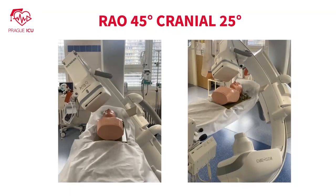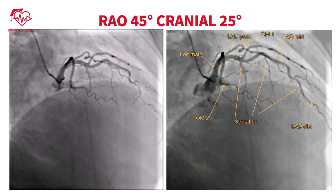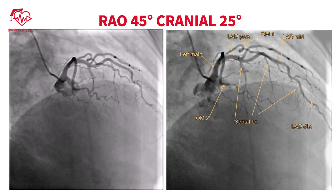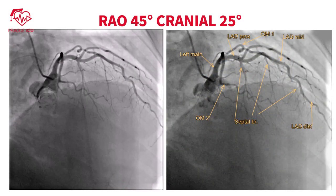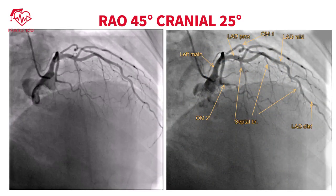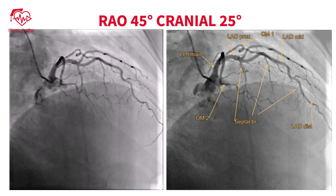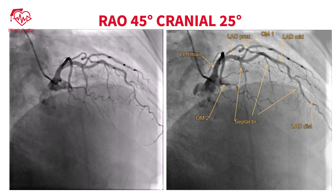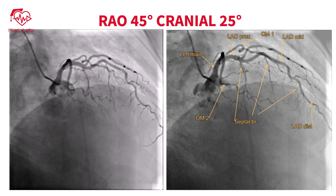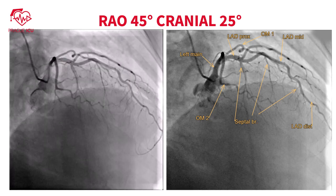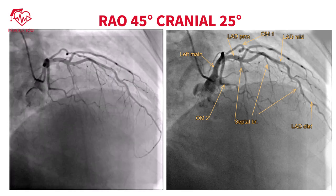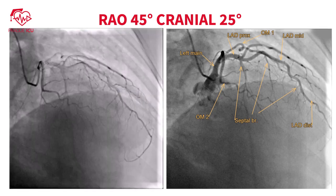Right anterior oblique 45 degrees cranial 25 degrees view is best for visualizing the LAD and septal branches. In this view, we plan which septal branch is suitable for the alcohol septal ablation.